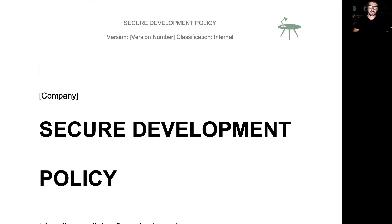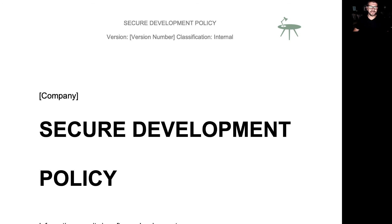The Secure Development Policy is designed to work with any software development lifecycle. You will have process documents about how you do software development that satisfy the requirements covered in the policy. Whether you're running a sprint, agile, waterfall, or whatever methodology you use, the Secure Development Policy will satisfy the requirements of the ISO 27001 standard and ensure you're developing in a secure way — security by design, security by default. And that's your information security policy for secure development. Thank you.